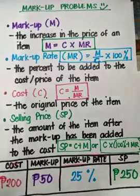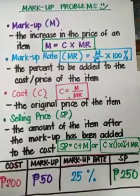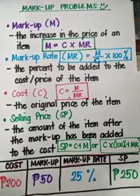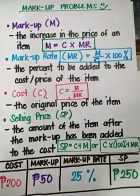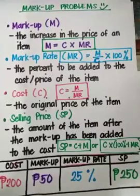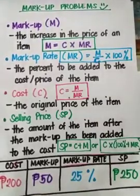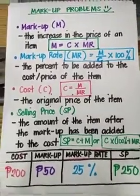So, original price plus the markup gives you your profit, and you will get the selling price. Or you can multiply the cost by 100% plus MR, or the markup rate. I have here an example.